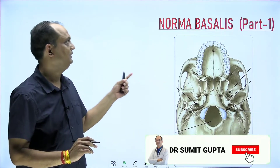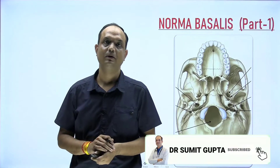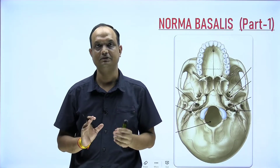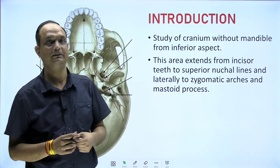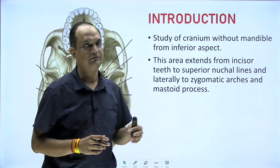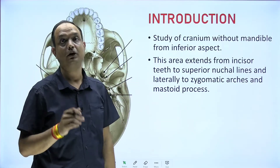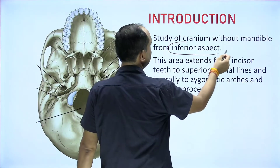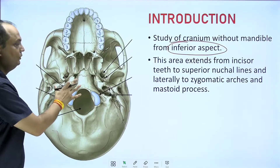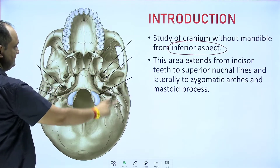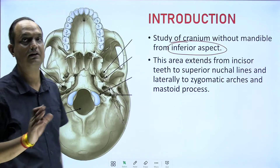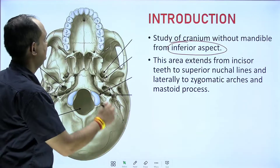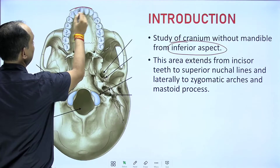Hello students, today we will discuss the norma basalis part of the skull. We will discuss it in three sessions. Norma basalis is the study of the cranium without the mandible from the inferior aspect — when you are seeing the skull from below, this study is known as the exterior of the skull under the heading of norma basalis. This area extends from the incisor teeth.